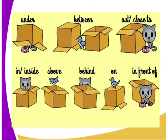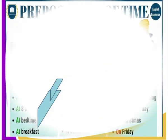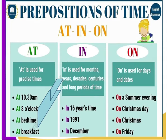We also have prepositions of time: 'at,' 'in,' and 'on.' 'At' is used for precise times — at 10:30, at 8 o'clock, at bedtime, at breakfast. 'In' is used for months, years, decades, centuries, and long periods of time — in 16 years' time, in 1991, in December. 'On' is used for days and dates — on a summer evening, on Christmas Day, on Christmas, on Friday.